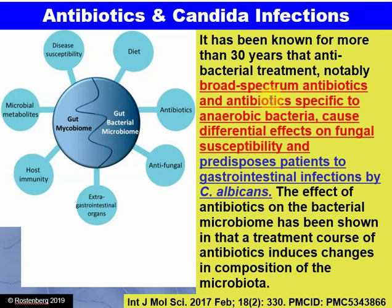Broad-spectrum antibiotics are causing fungal overgrowth. When you take antibiotics, they don't kill fungus. Antibiotics have never been designed nor expected to actually kill fungus — they're a totally different organism. So when you kill all the bacteria, including the healthy bacteria, with antibiotics, there's less competition. The fungus just grows and takes over.